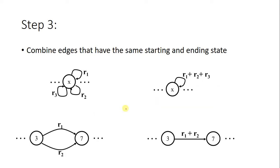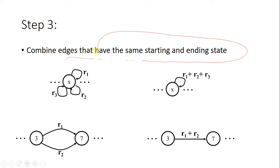In Step 3, we combine all the edges that have the same starting and ending states — in other words, we combine parallel edges with plus signs. All parallel edges are combined with plus signs.